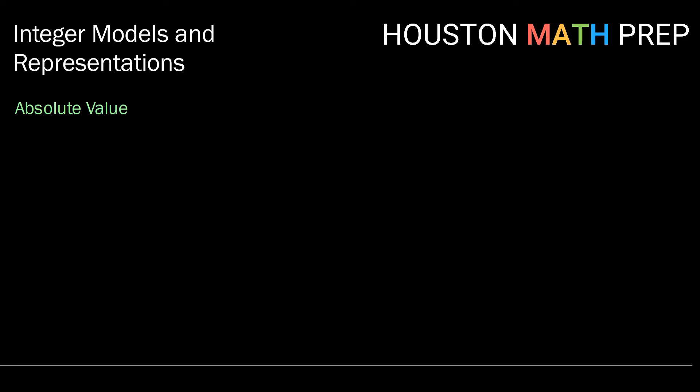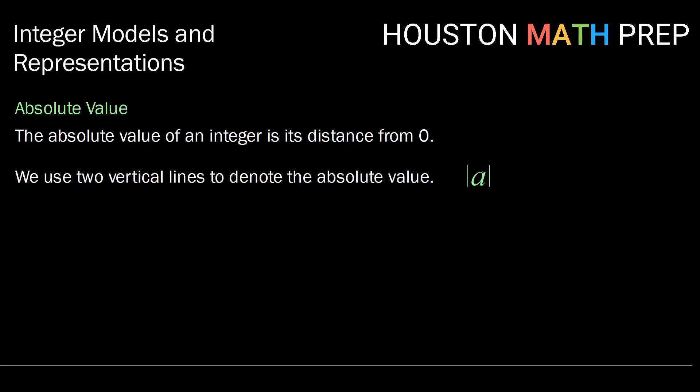One thing that's very important to learn about when we're talking about integers is the concept of absolute value. The absolute value of an integer is its distance from zero. So we've talked about integers having both a distance and a direction from zero. But when we talk about the absolute value, we're isolating just the distance.